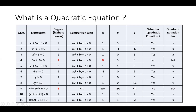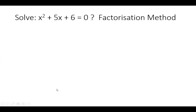B value here is 1 and c value here is -16, because 16 moves from the right-hand side to the left-hand side with an opposite sign, that is -16. So b value is 0 and a value is 1. In example number 9, the expression has highest degree 3, so this is not a quadratic equation — it is actually a cubic equation.